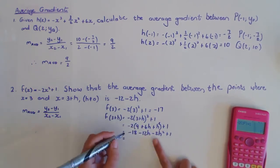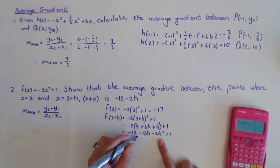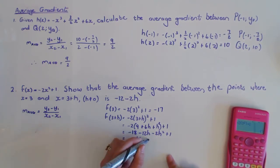So this actually becomes -2h² - 12h - 18 + 1, which is -17.